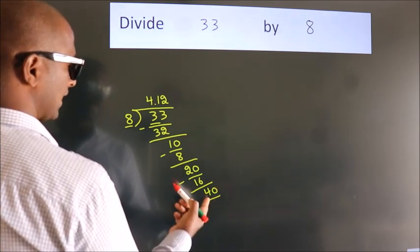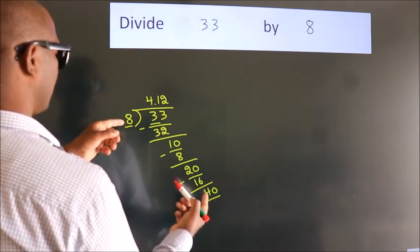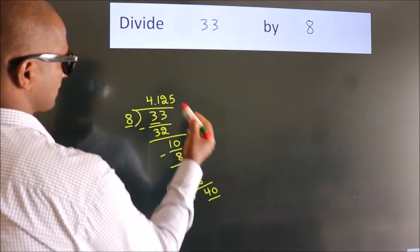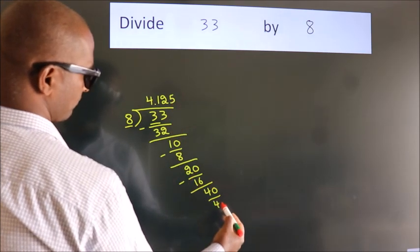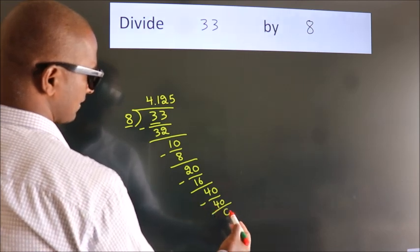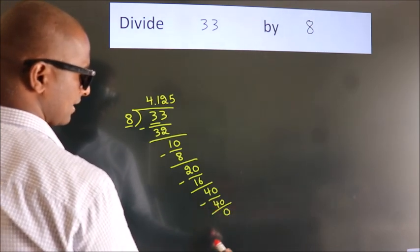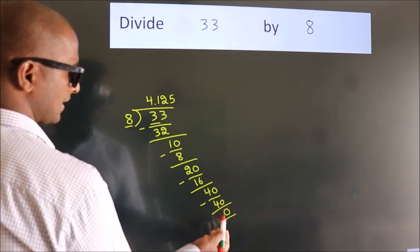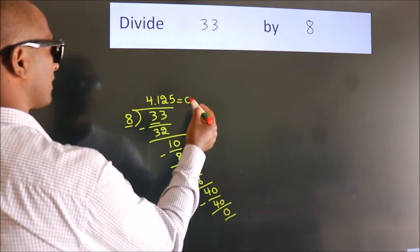When do we get 40? Now, we subtract. We get 0. Here, we got remainder 0, so this is our quotient.